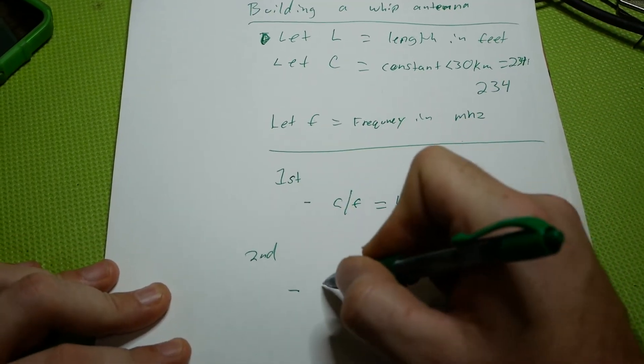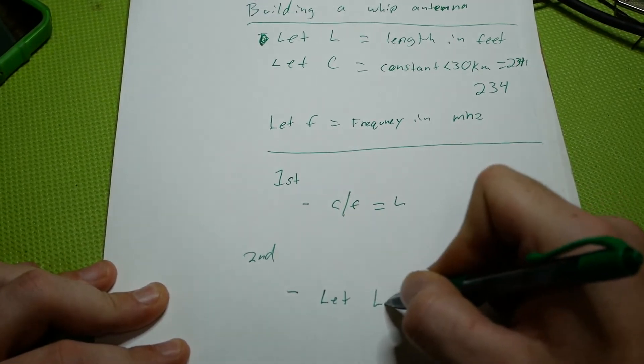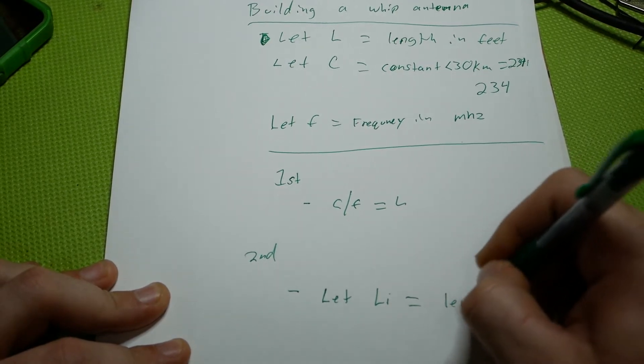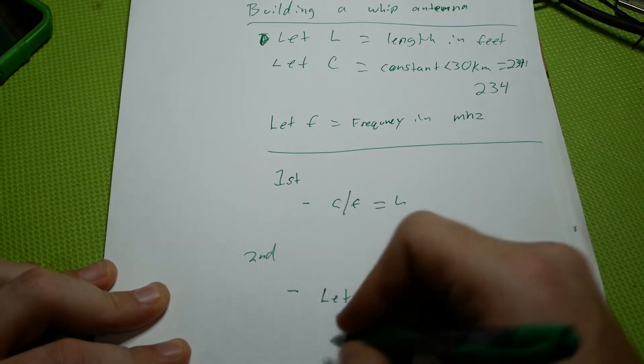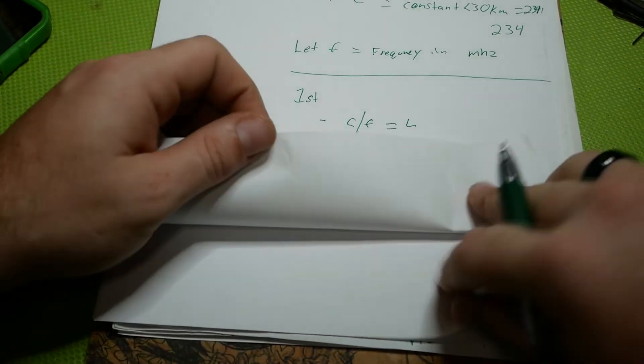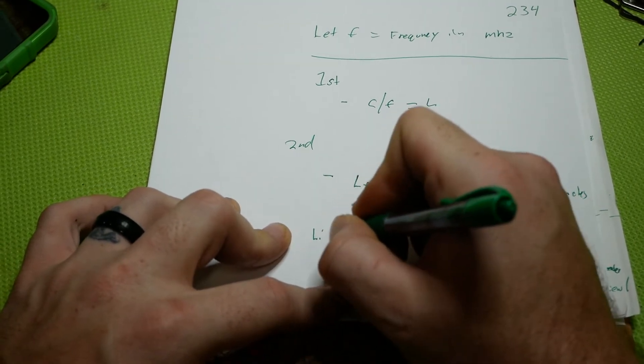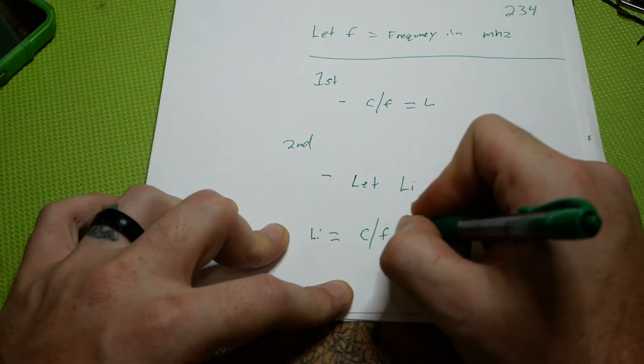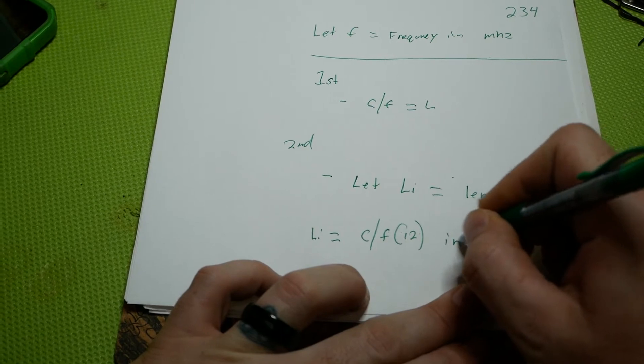The second formula is we're going to define an extra rule. We will let uppercase L, lowercase i equal length in inches. All right. I'm running out of paper here. Let me grab another paper. Well, no, I can still fit that. So this new formula will be LI equals C divided by F multiplied by 12. And this gives you inches.